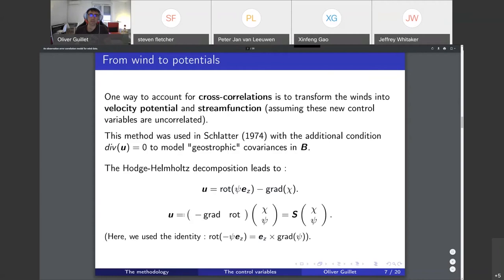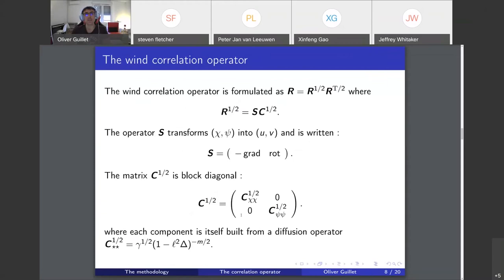The vector u is actually a transform of the velocity potential and stream function, and S is the name of this new transformation. It contains the gradient, minus the gradient, and the curl. What we do to model R is we model the square root of R actually, and from the square root we will deduce the formula of the full observation error covariance matrix.